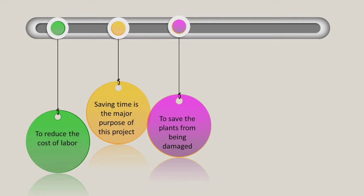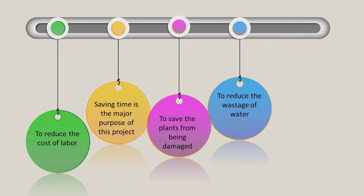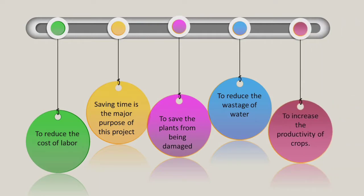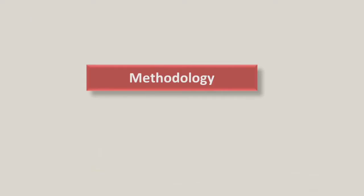The third objective is to save plants from being damaged. Many plants become damaged due to improper irrigation systems because farmers don't always know when to give water, so plants get damaged. This mechanism also saves plants from damage. The fourth objective is to reduce the wastage of water — in traditional irrigation systems, water and electricity are wasted, and this system will reduce that. The fifth objective is to increase the productivity of crops. With a good irrigation system, productivity will automatically increase.